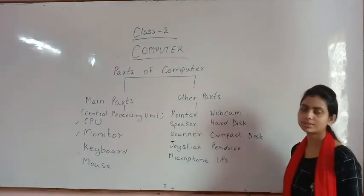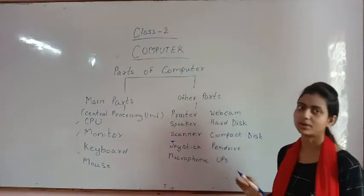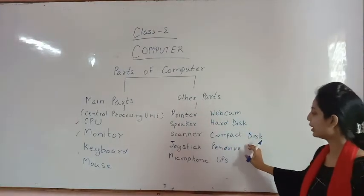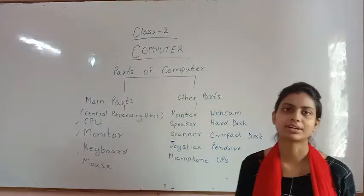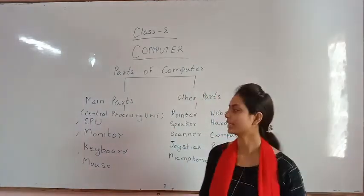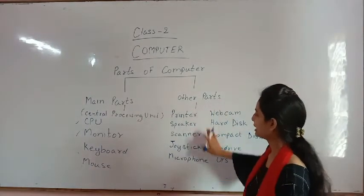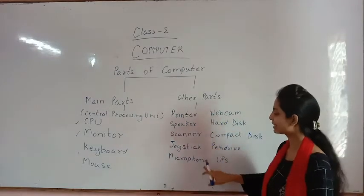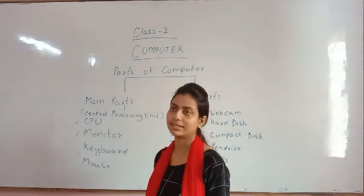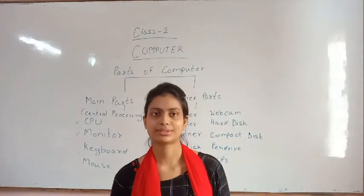Without those four main parts, we can't work on a computer. The other parts depend on your work and requirements. If you need to work with UPS or a pen drive, you need them; otherwise you don't. In other parts there are 10: printer, speaker, scanner, joystick, microphone, webcam, hard disk, compact disk, pen drive, and UPS. Remember all of this. I will explain the functions of each part in the next video. Thank you, class.